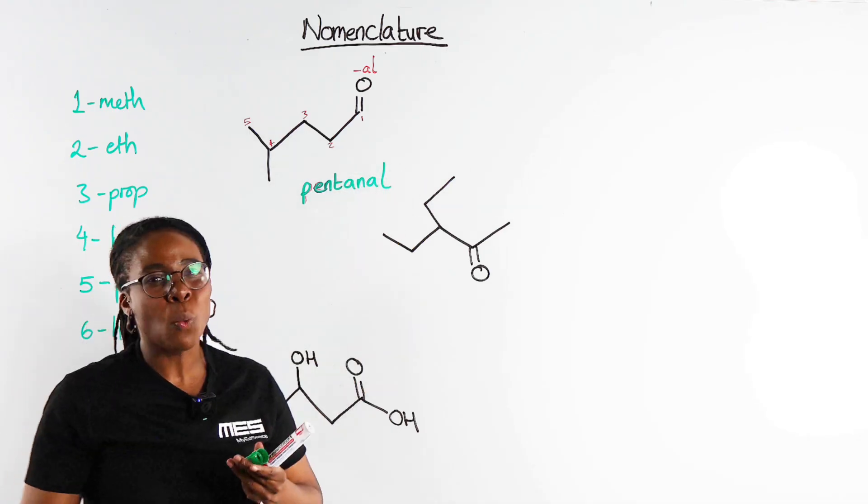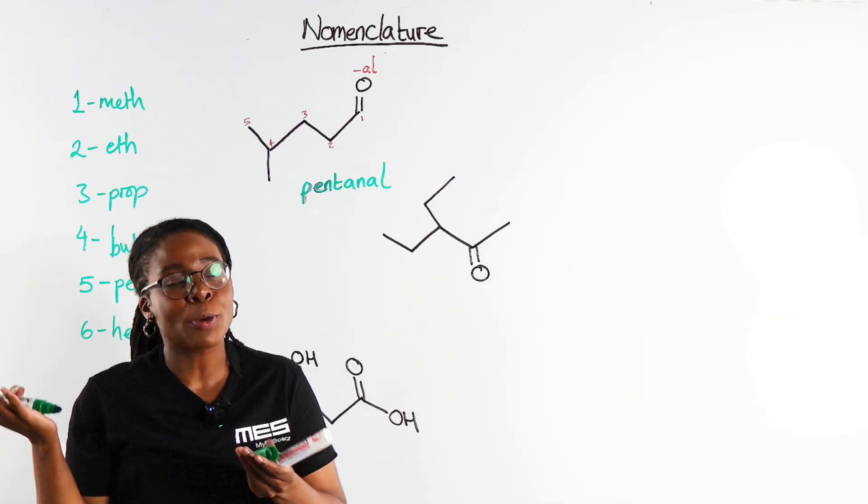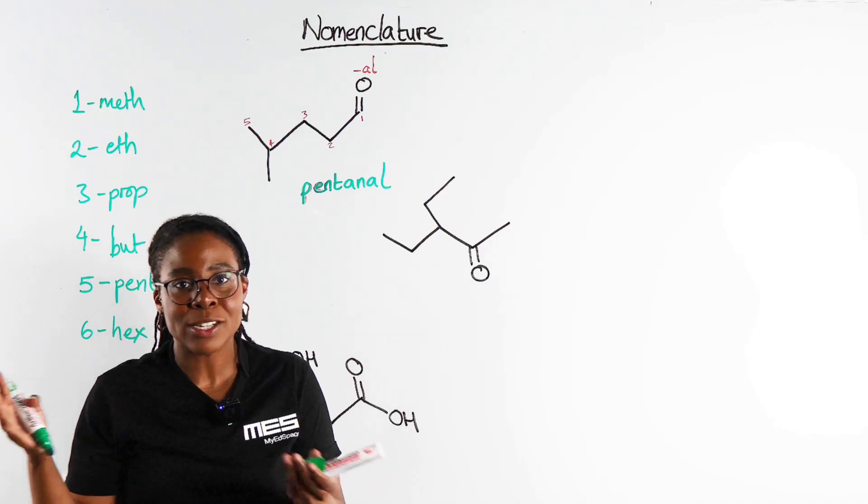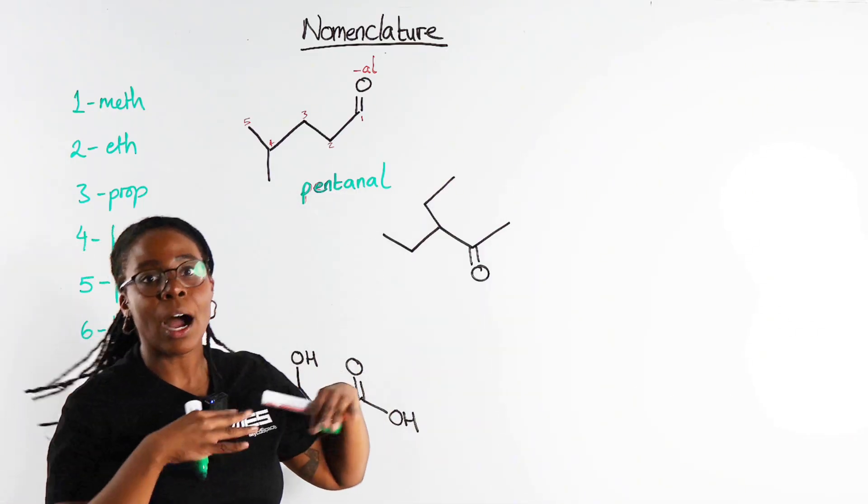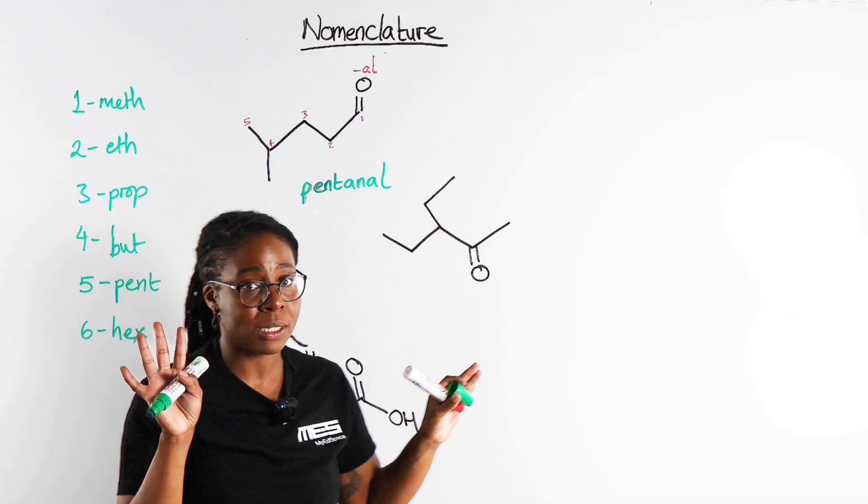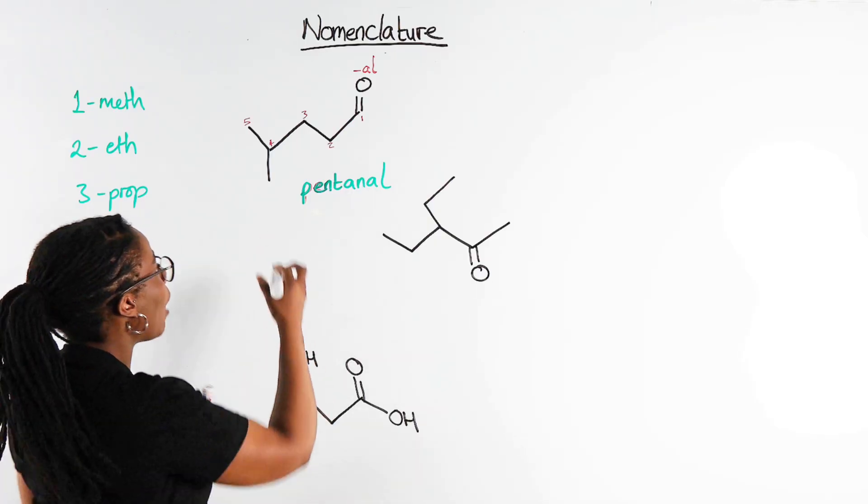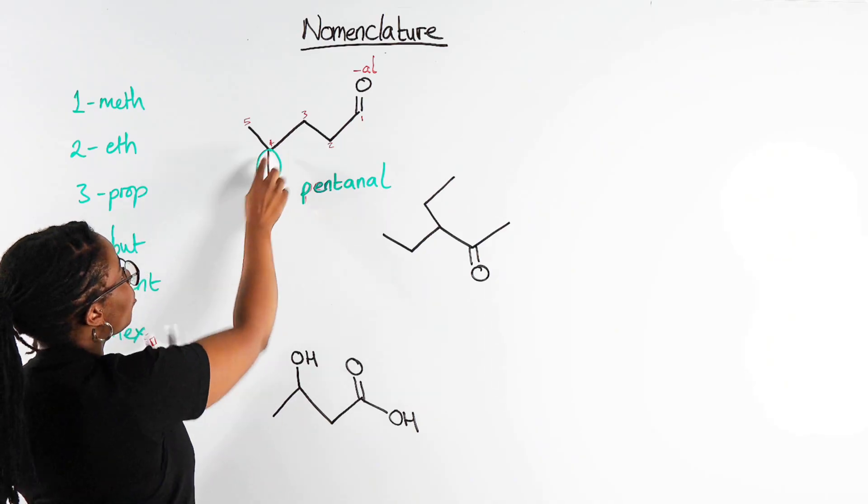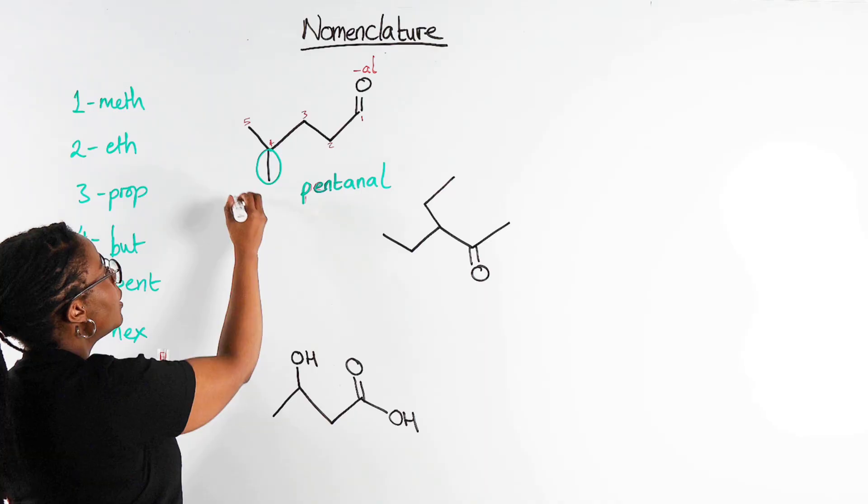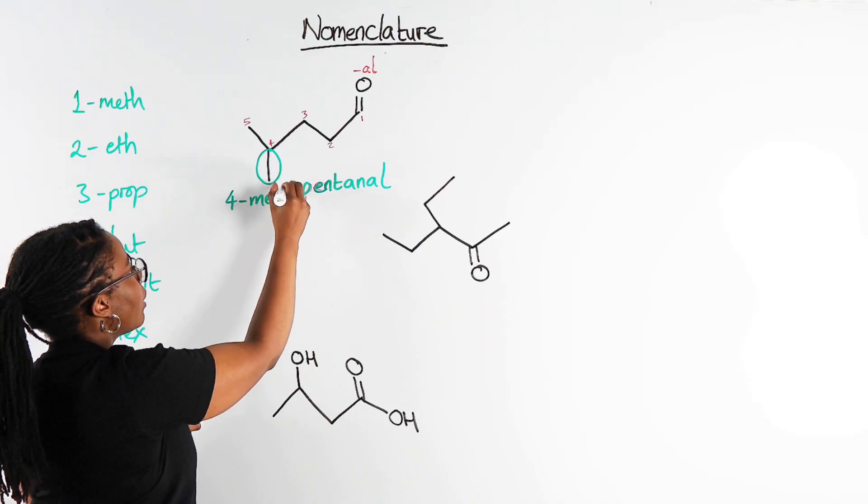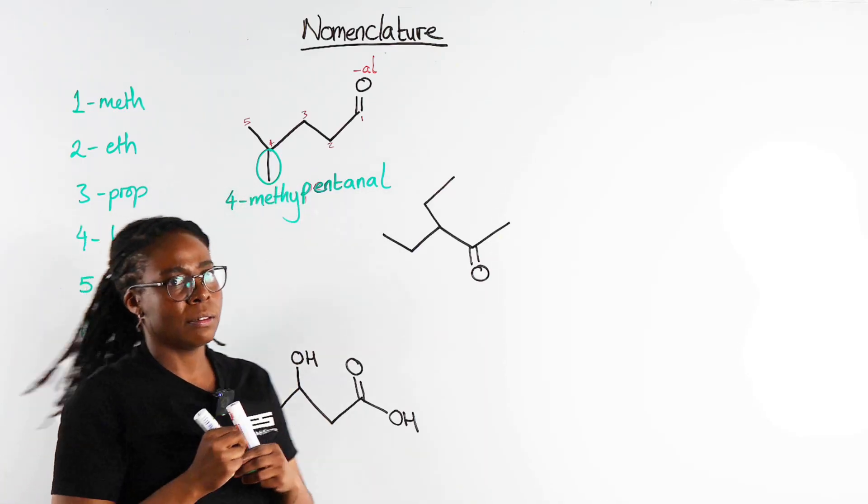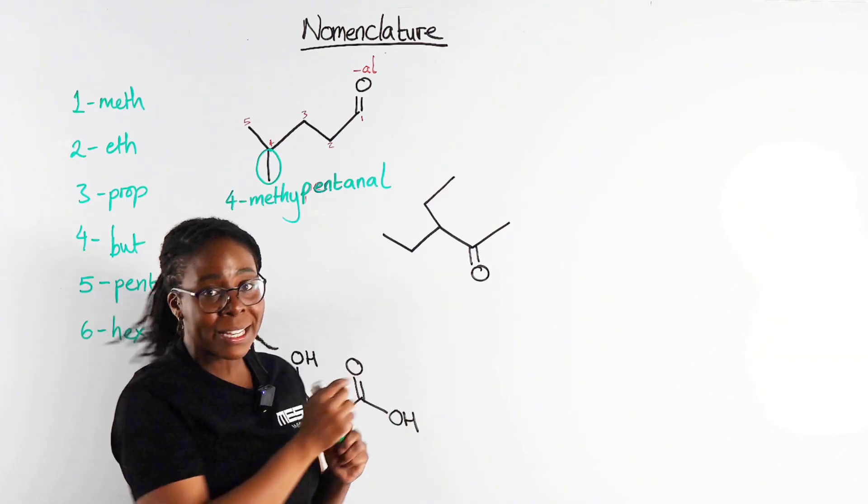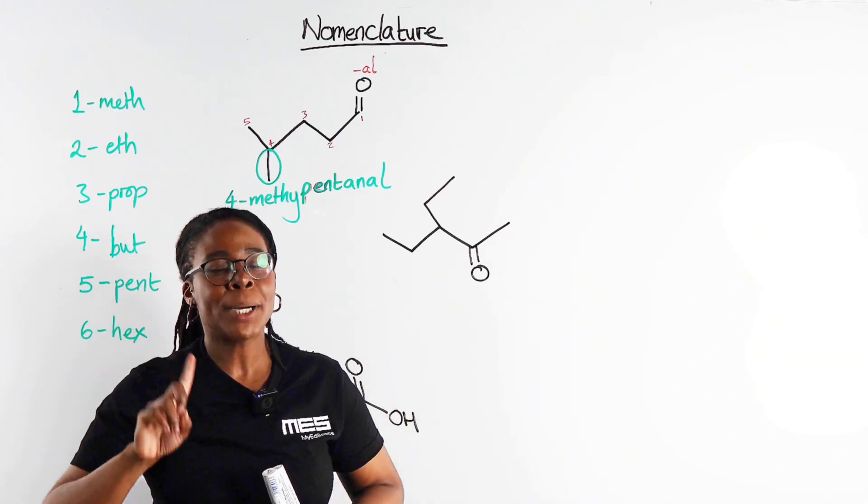Putting that together we've got pentanal. Now pentanal, I mean it's not wrong, but because an aldehyde can only go on carbon number one you don't have to number it because there's no other place it could possibly be. This is already unambiguous, which is one of my favorite words in chemistry. Now let's not forget our methyl group here, our one carbon branch. This is, as pre-numbered, on carbon number four, so this is 4-methylpentanal.